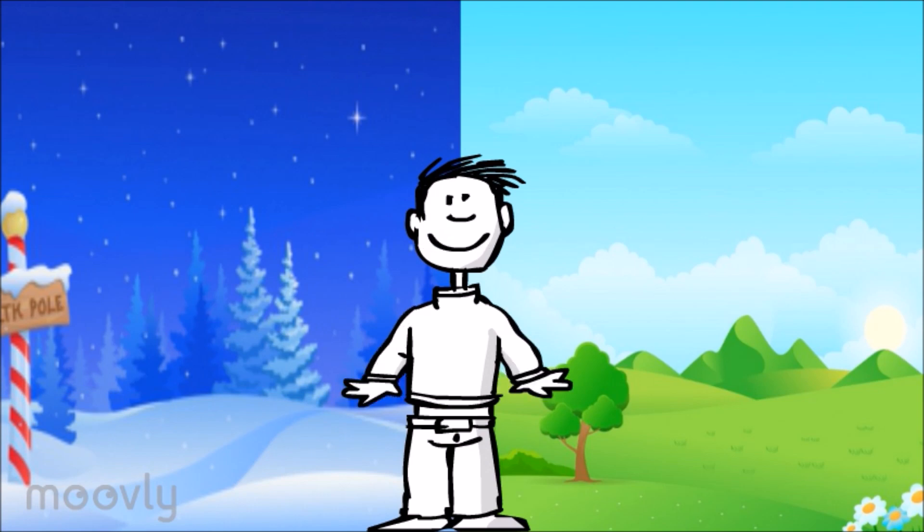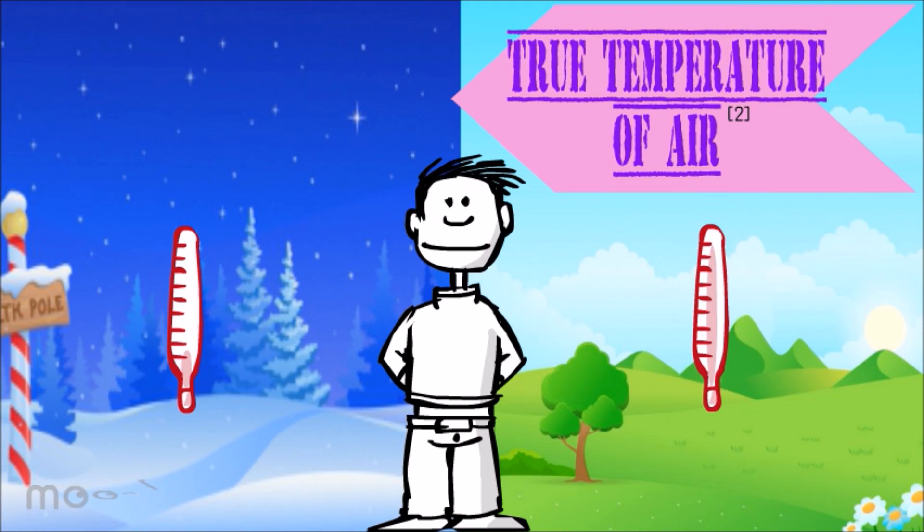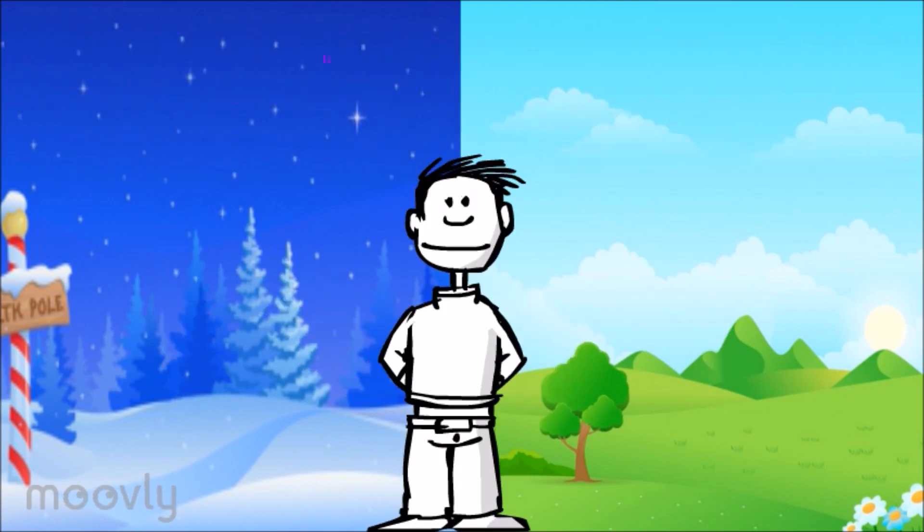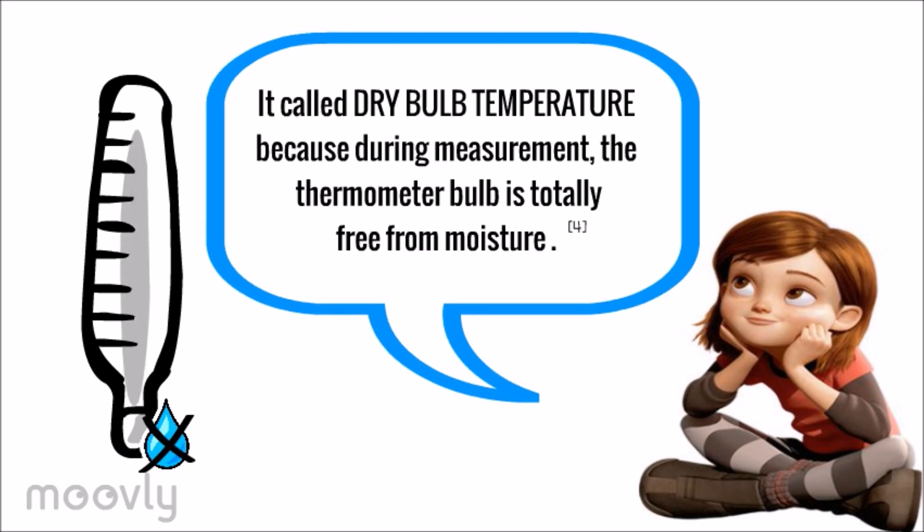Dry bulb temperature, also known as ambient temperature, is the measurement of true temperature of air. It's called dry bulb temperature because during measurement the thermometer bulb is totally free from moisture.